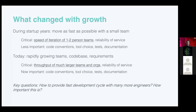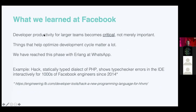The immediate effect of not addressing tools and conventions while adding more people is that everybody becomes less efficient. But it turns out whether that's acceptable depends on scale. What we learned from Facebook's experience is that developer productivity for large teams becomes critical, not merely important. Everything that helps shorten the developer cycle matters. Catching a problem at compile time is much cheaper than catching it in CI, let alone in production.